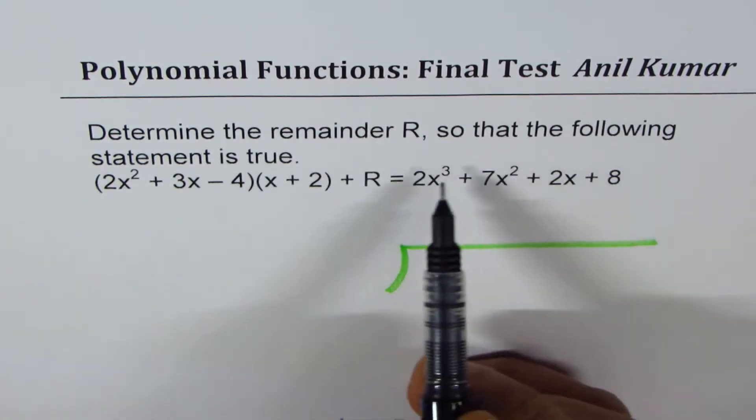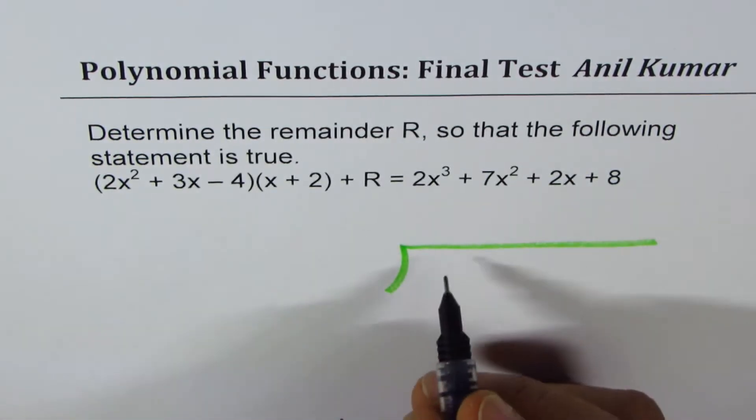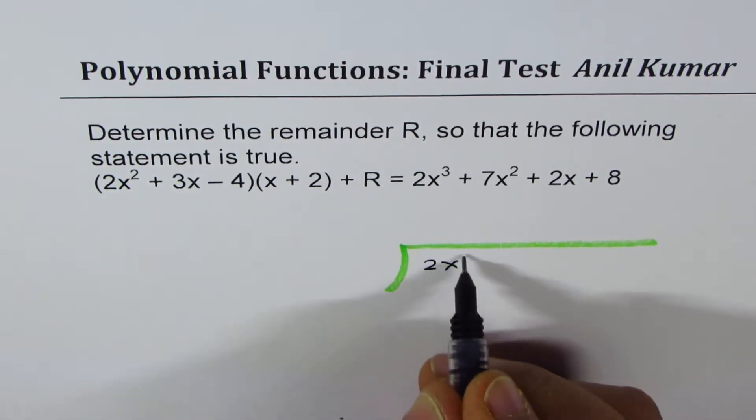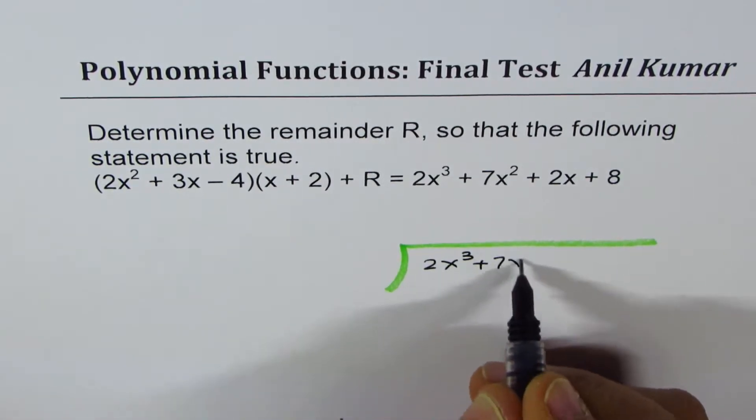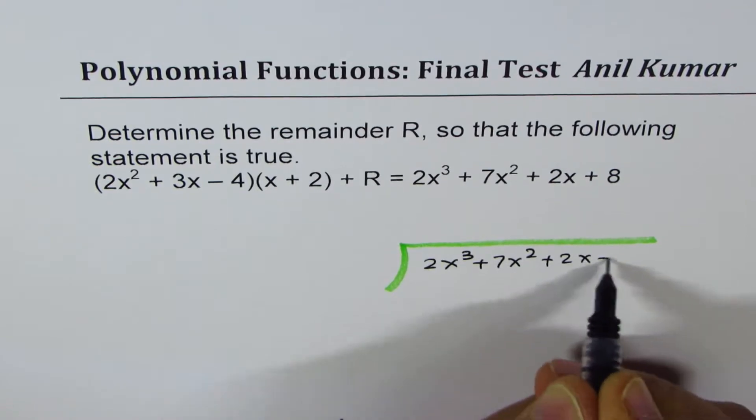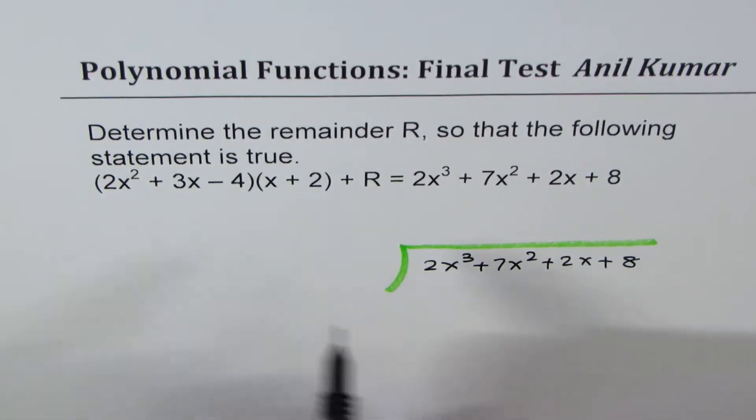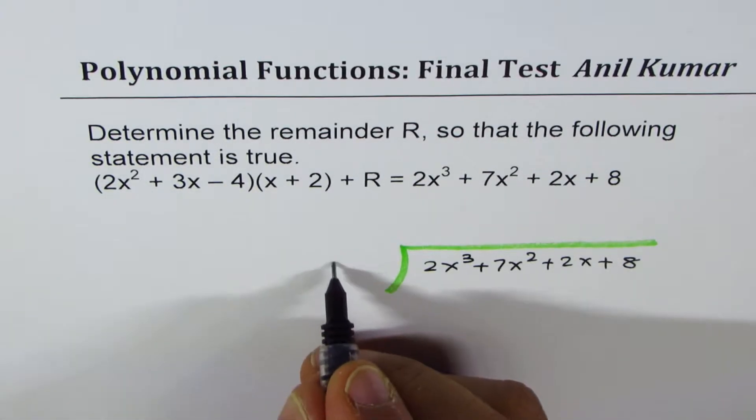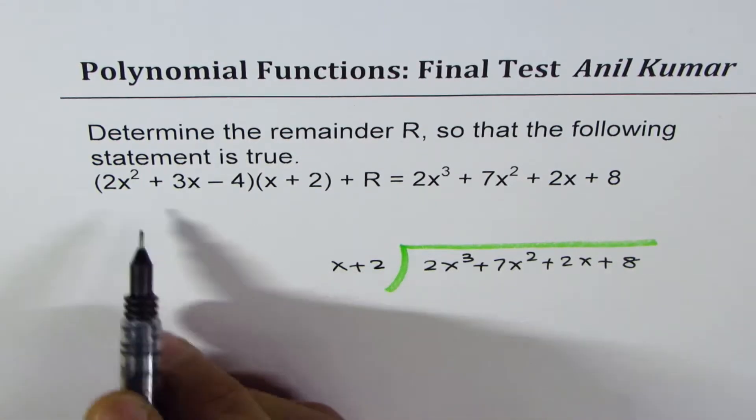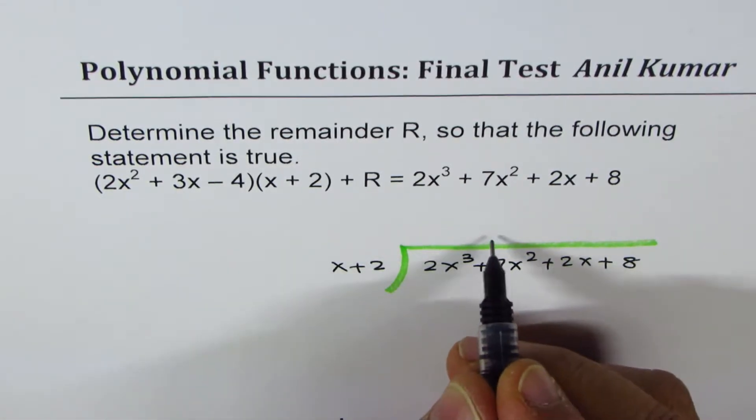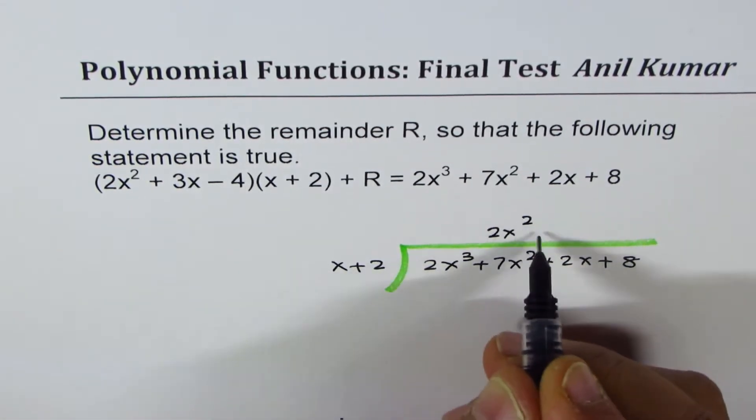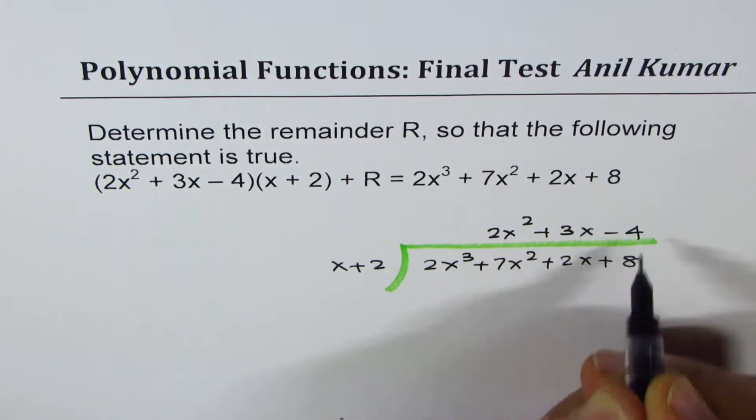The function which we are talking about is 2x cubed plus 7x squared plus 2x plus 8. It is being divided by the divisor x plus 2. So what you get is a quotient, which is 2x squared plus 3x minus 4.